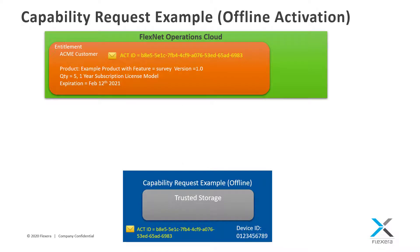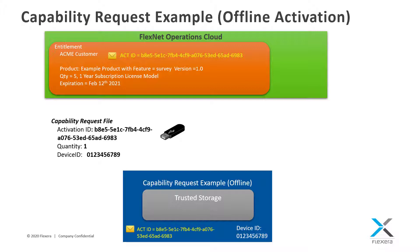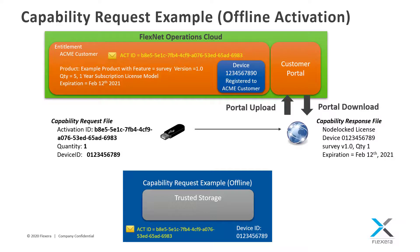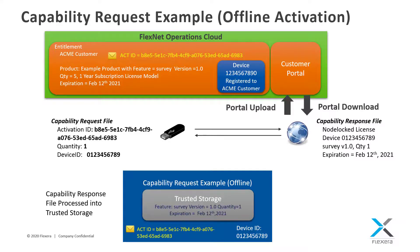Now let's take a look at how a license can be activated on a device that does not have an internet connection. In this scenario, the capability request generated by the example will be saved to a file. This file will then be transported to an internet-connected system where the capability request file can be manually uploaded into the FlexNet Operations customer portal. As with online activation, FlexNet Operations will verify the activation ID and requested quantity are valid. It will then register the device to the ACME customer account and generate a capability response file. This file can then be downloaded and transported back to the disconnected device. The response file is then processed into trusted storage.